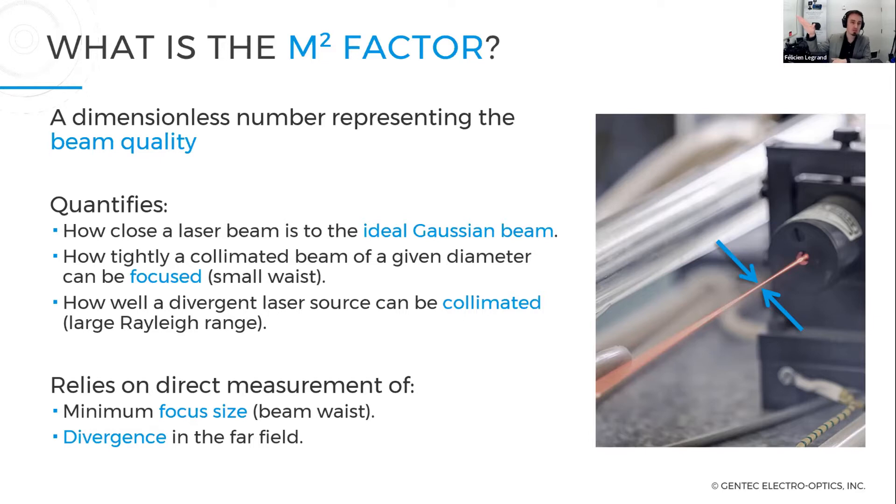And then how well a divergent laser source can be collimated to get the largest Rayleigh range as possible. It really depends on your application and what you want to achieve. If your goal is to get as close to a Gaussian beam as possible, you will want the M² value to be as close as one. This measurement of the M² value relies on direct measurement of the minimum focus side, the beam waist, the minimum size I can achieve with my beam diameter and the divergence in the far field.